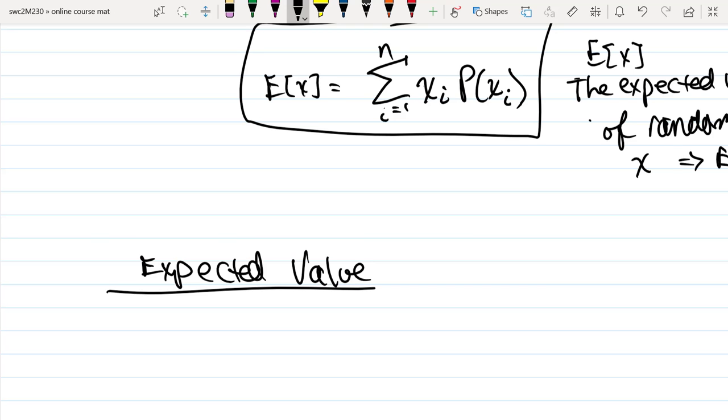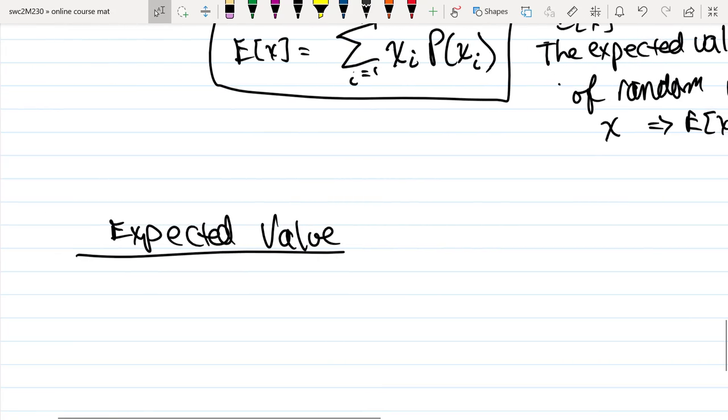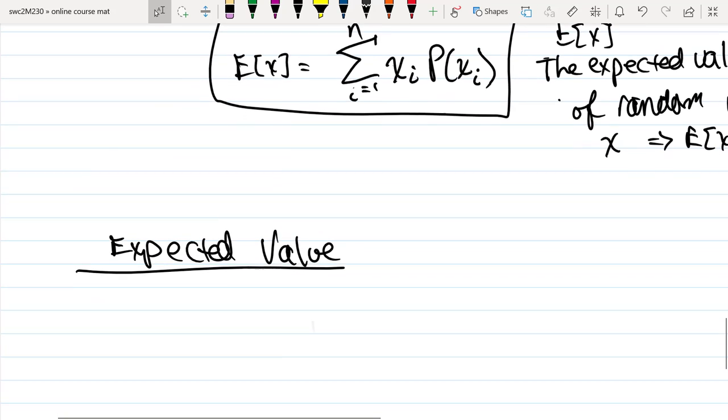Okay, so in the previous discussion we talked about what an expected value is. It's a type of averaging, and we can get this from a probability distribution table.